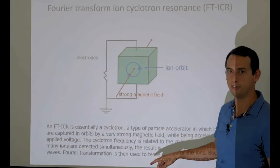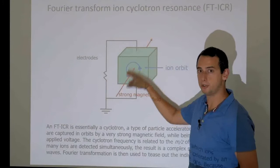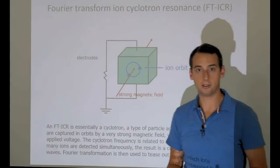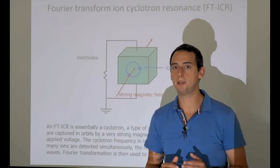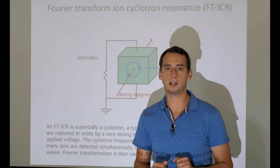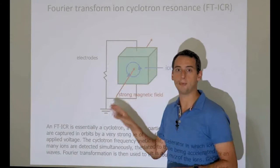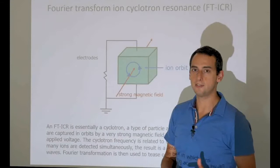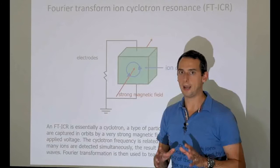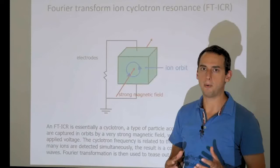To make magnets powerful enough to keep these ions in a cyclical orbit, you use superconducting magnets. Superconducting magnets need very low temperatures—below four degrees Kelvin, very close to absolute zero. That's roughly minus 269-270 degrees Celsius. The only way to get them that cold is by cooling them with liquid helium. Helium is a finite resource and quite expensive.